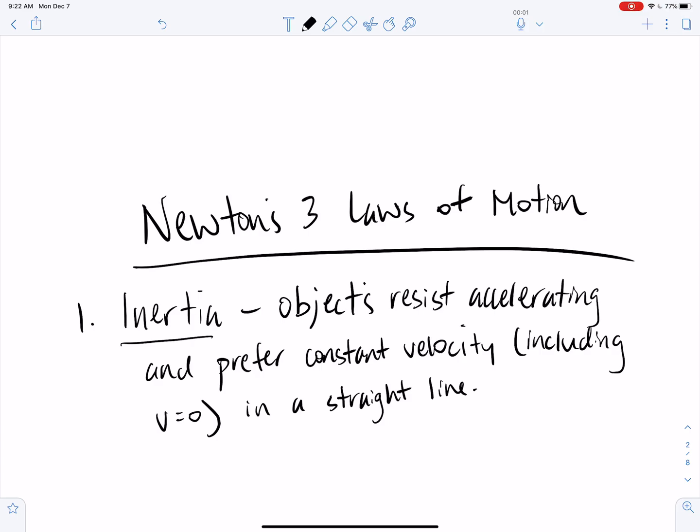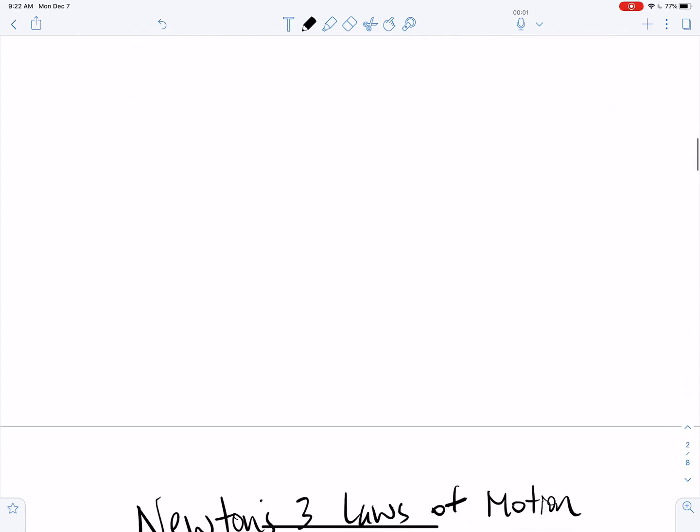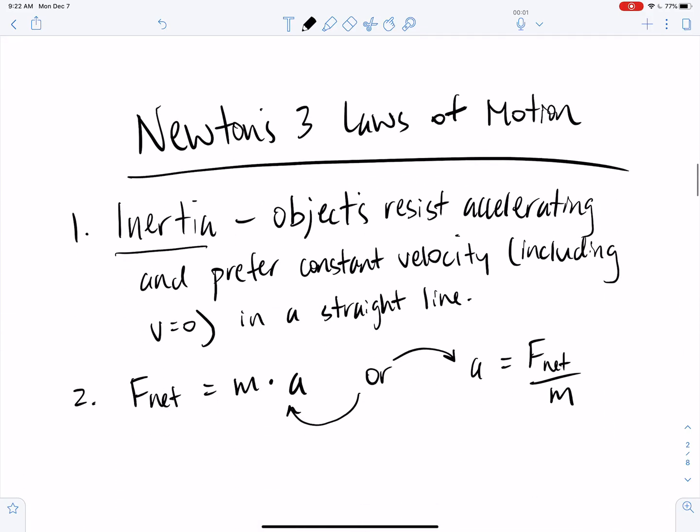Newton's second law of motion is a law that relates the net force on an object to its mass and its acceleration. And it's famously written like this: the net force equals the product of mass and acceleration. Or you can rearrange it and solve for the acceleration and say that the acceleration is directly proportional to the net force on an object and inversely proportional to the mass of the object. So the acceleration of an object is always the ratio of the net force on it to its mass.